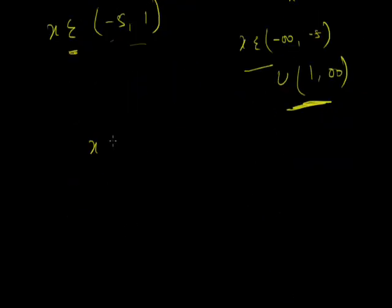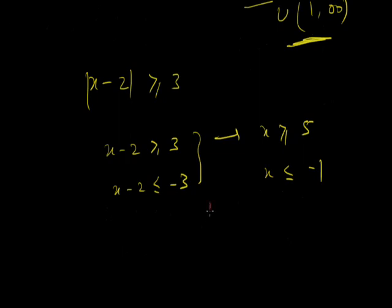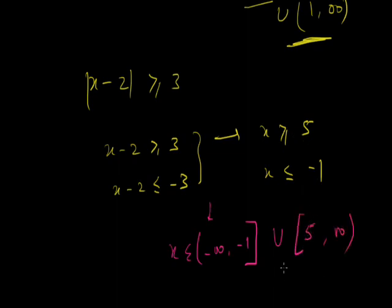For mod of x minus 2 greater than or equal to 3: it opens as x minus 2 greater than or equal to 3 and x minus 2 less than or equal to minus 3. This gives x greater than or equal to 5 and x less than or equal to minus 1. Because of the equal-to sign, we use square brackets: x belongs to minus infinity to minus 1 closed bracket, union, 5 closed bracket to infinity. Remember, infinity is not defined, so we always use an open bracket for infinity. More problems will be discussed in the next video.